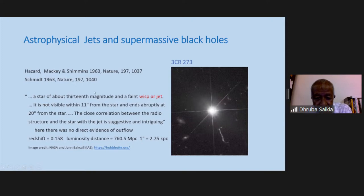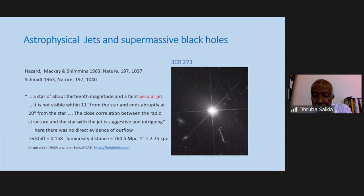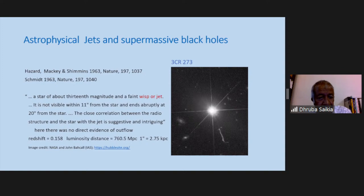The next major discovery in active galactic nuclei was the discovery of quasars. I won't digress too much into their history because we are limited by time, but these are extremely luminous objects believed to be galaxies — there is observational evidence to suggest they are nothing but galaxies with abnormally luminous nuclei. When they were first discovered, they looked star-like in the Palomar Observatory sky survey prints, which is how they got the name quasi-stellar objects.